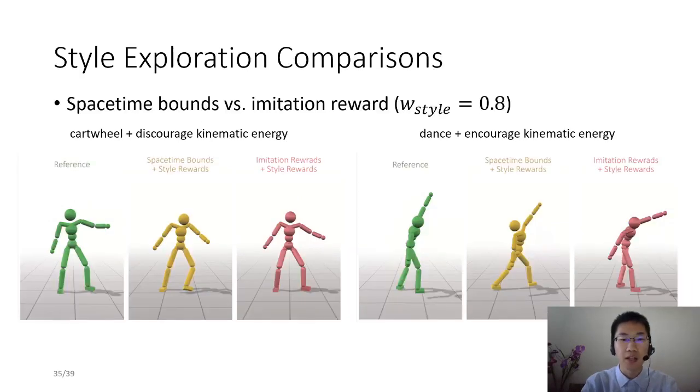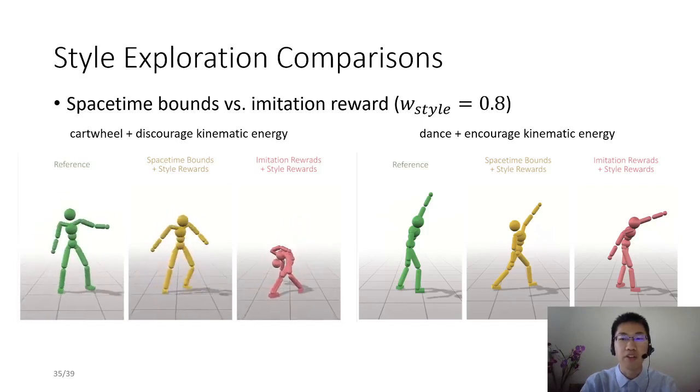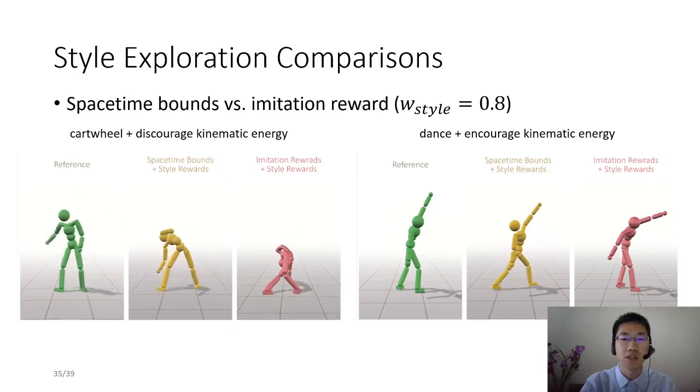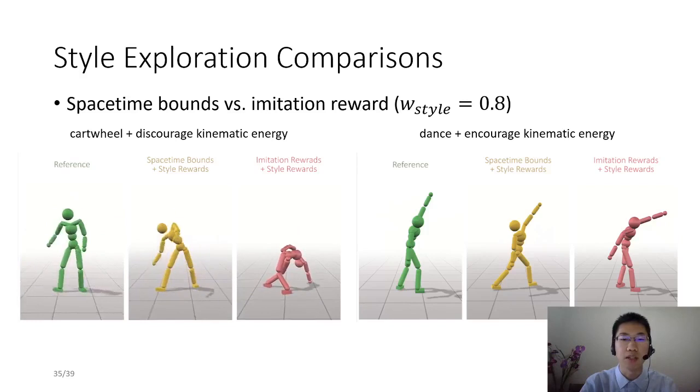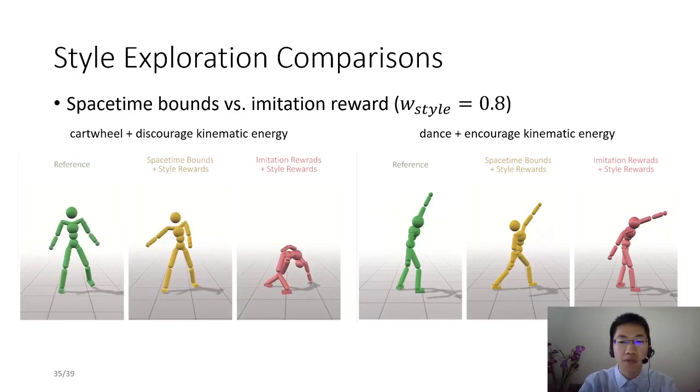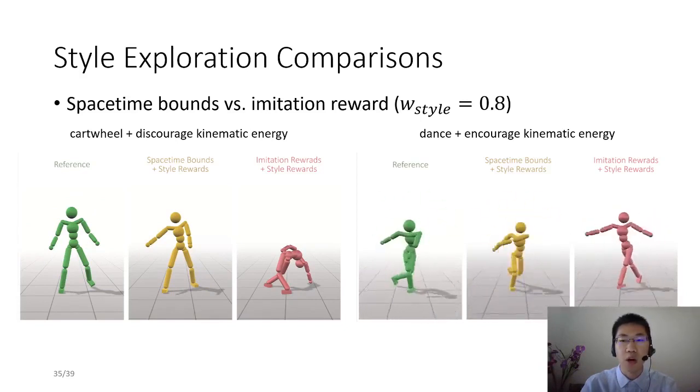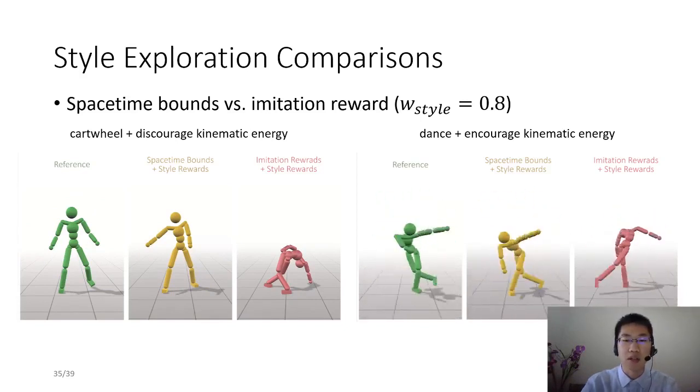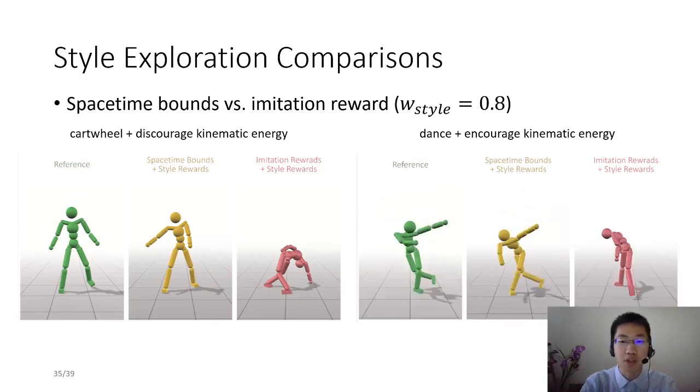To validate the necessity of spacetime bounds in style exploration, we conduct comparative experiments within our DRL framework. We use the weighted average of an imitation term and the heuristic style term. Here we show the results of high style term weight. High weight for style term results in either unstable or failed motor skills, while lower weight results in successful motor skills but prohibits exploration of new styles.